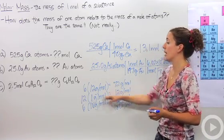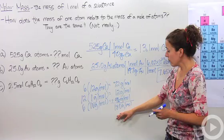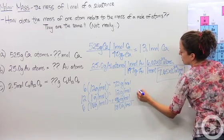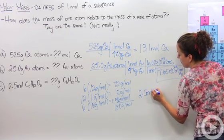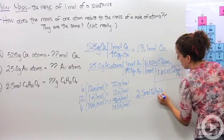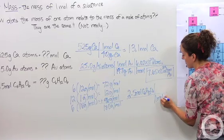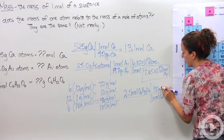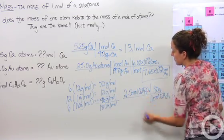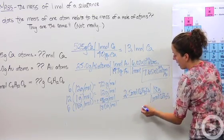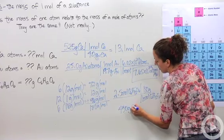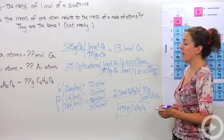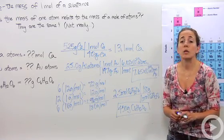So 180 grams per mole is the molar mass of glucose — the whole compound. That's the mass of one mole of glucose. The question asks about 2.5 moles of glucose. So we take 2.5 moles of glucose times 180 grams per mole, crossing the moles unit out. 2.5 times 180 is 450 grams of glucose. So 2.5 moles of glucose equals 450 grams of glucose using our molar mass.